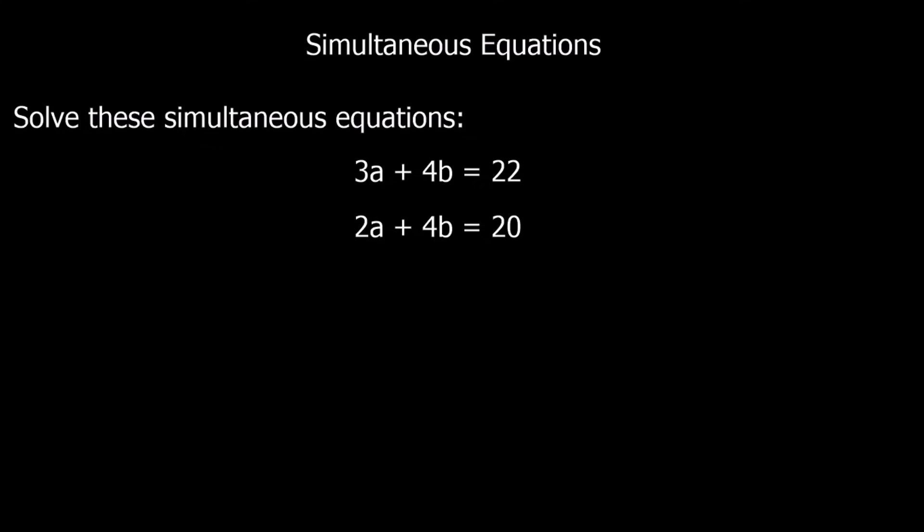In these simultaneous equations we've got two things we've got to work out and we've got two equations. So a and b are the same number in both of these equations and we've got to work out what a is and what b is. We're going to solve these equations by eliminating either a or b.